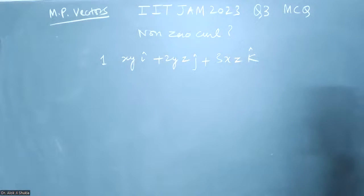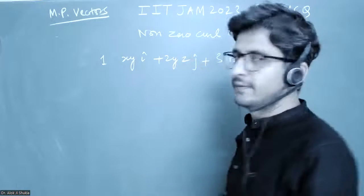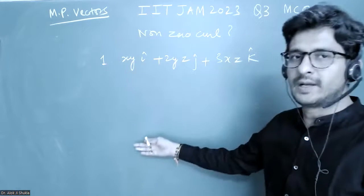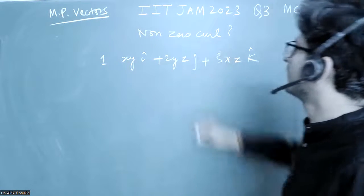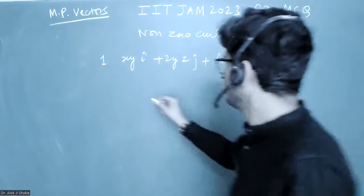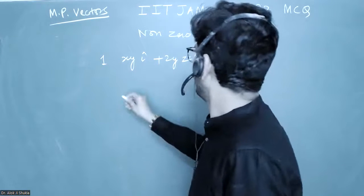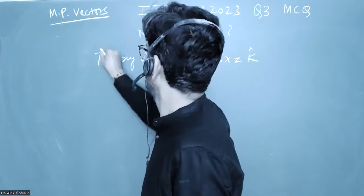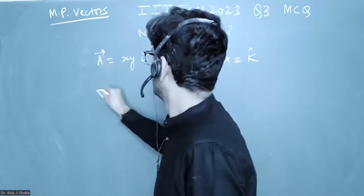This is a question on curl of a vector. Four vectors were given and they have asked which one of the following has nonzero curl. Let us start from the first one. If I take this as a vector, suppose this is capital A, I need del cross A.